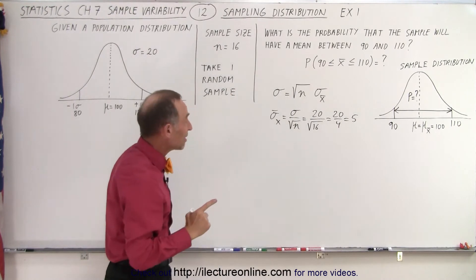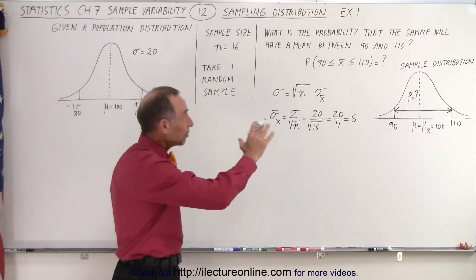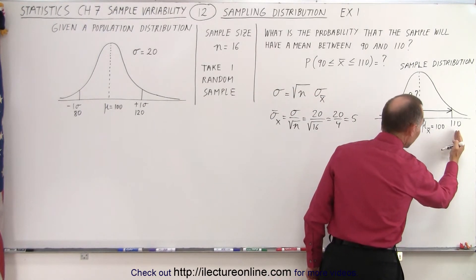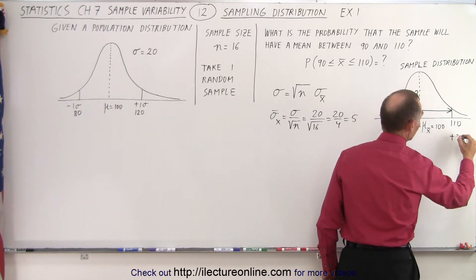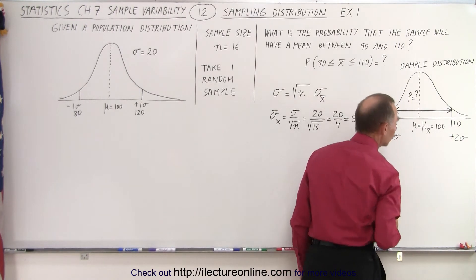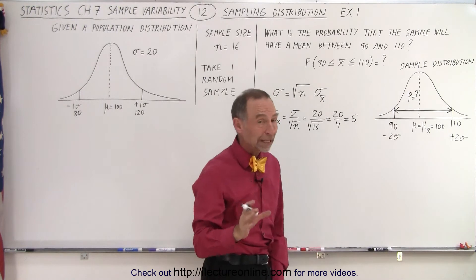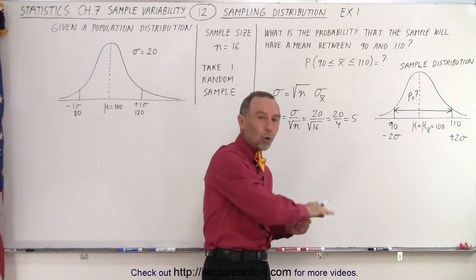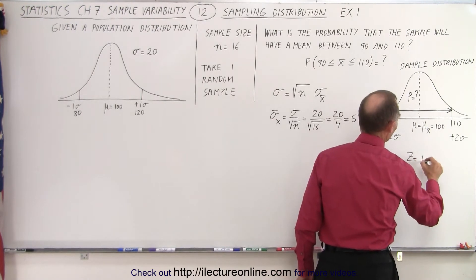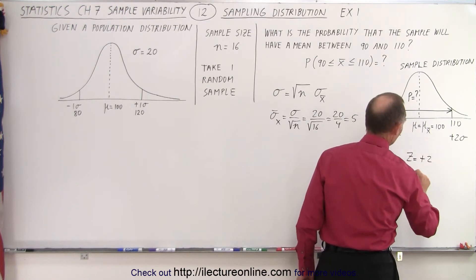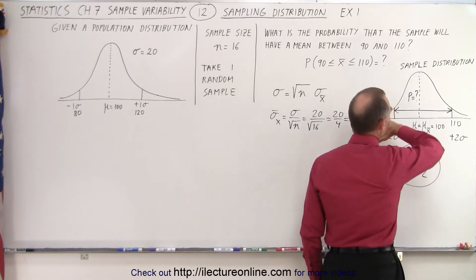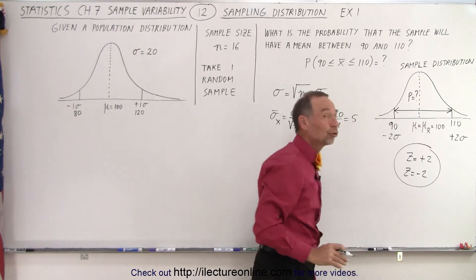That gives us 20 divided by 4, which equals 5. So one standard deviation of the sample distribution equals 5. That means plus 10 would be two standard deviations — so 110 is plus two standard deviations and 90 is minus two standard deviations. Converting to z-scores: z equals plus two on the high end and z equals minus two on the low end.